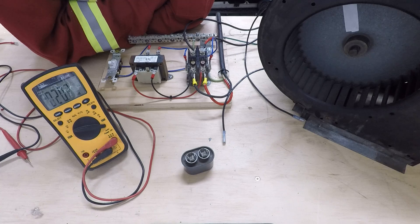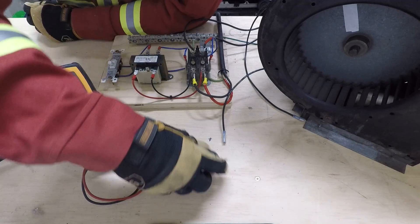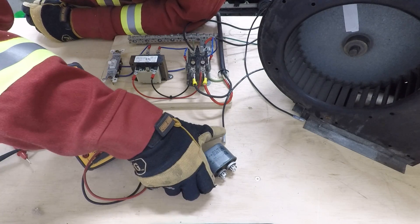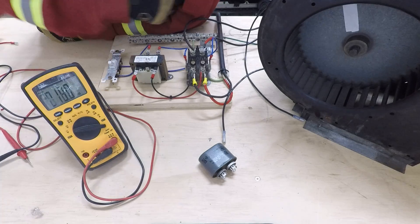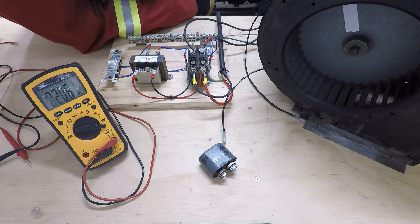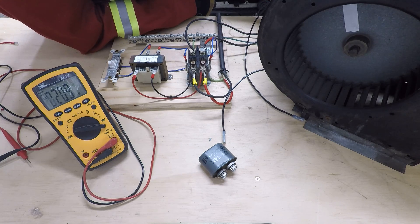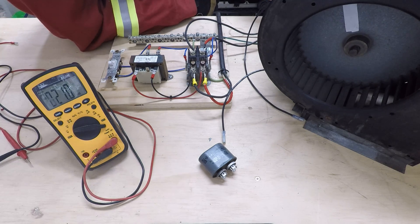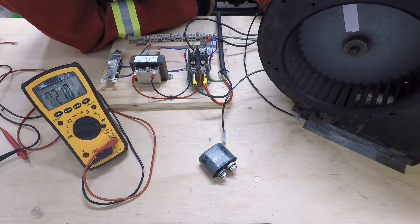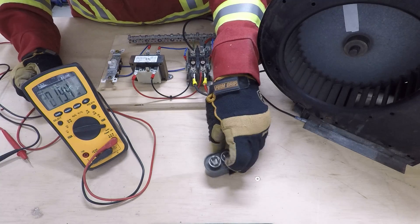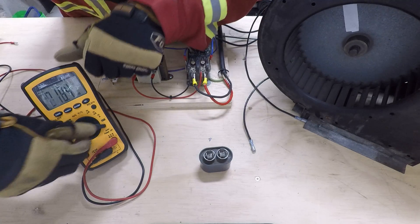The other thing you might find sometimes is that the capacitor has the label rubbed off on it and you can't read it anymore. On the motor data plate itself, it'll probably state what size capacitor is supposed to be wired into it. In this case, the data label also says it's a 5 microfarad capacitor.